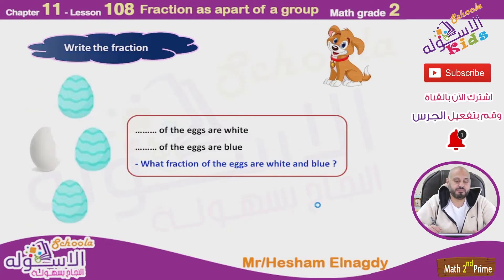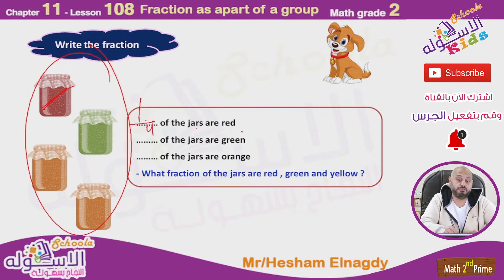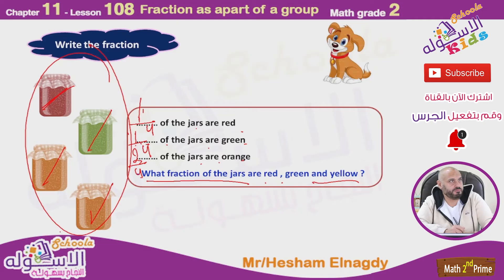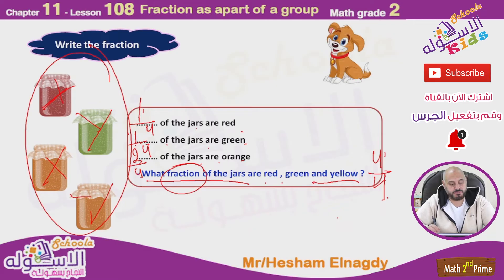Write the fraction. What fraction of the guards are red? One from four — one over four, one-fourth. Of the guards that are green: one from four — one over four, one-fourth. Of the guards that are orange: one, two — two over four, two-fourths. And what fraction are red, green, and yellow together? Four from the total, which is four — four-fourths.